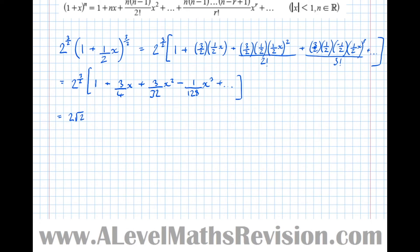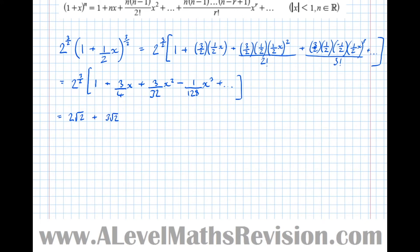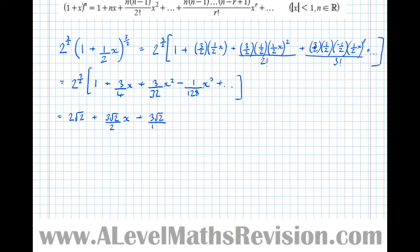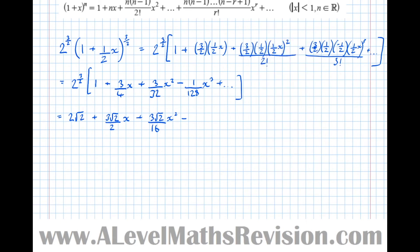So multiplying through by 2√2: 2√2 × 1 = 2√2. Then 2√2 × 3/4 = 3√2/2. So plus 3√2/2 · x. Then 3/32 × 2√2 = 3√2/16, so plus 3√2/16 · x². And 1/128 × 2√2 = √2/64, so minus √2/64 · x³, and so on.